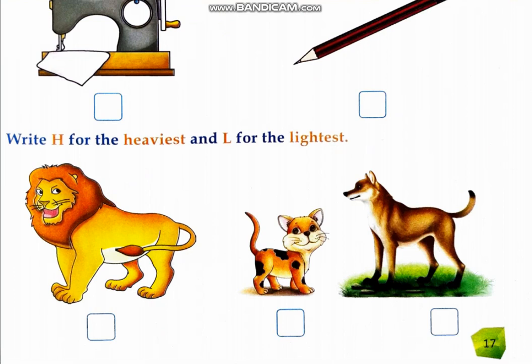Next, the machine is heavy, so you have to tick the heavy one. And the pencil is light weight, so you will cross the pencil. Next, write H for the heaviest and L for the lightest. Heaviest means sabse bhari and lightest means sabse halka. Among these three, which one is the heaviest? Lion is the heaviest animal.